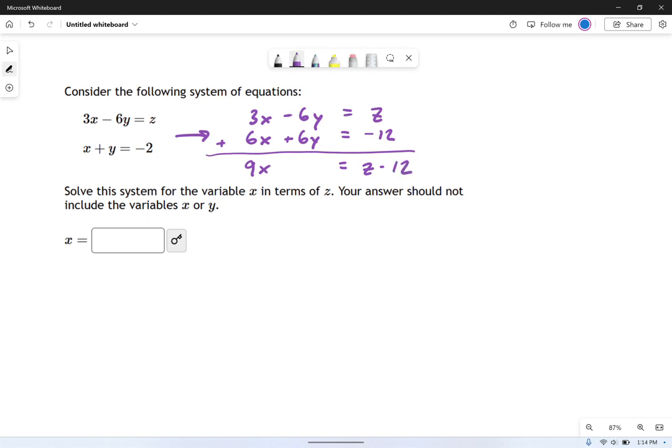So that's pretty nice. Now I can turn this into x equals z over 9 minus 12 over 9, and you can simplify that if you want. But that basically gives me my answer that I need right here.